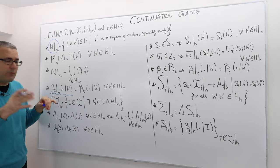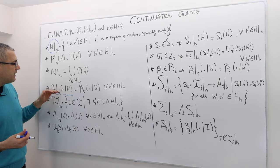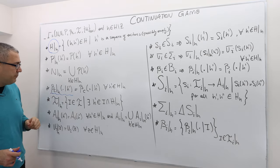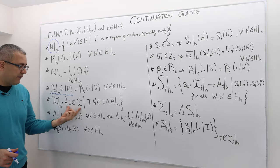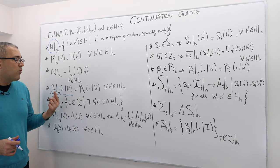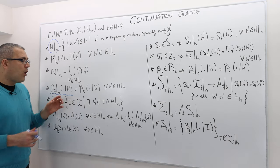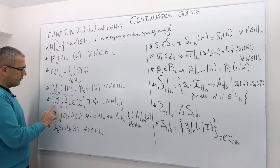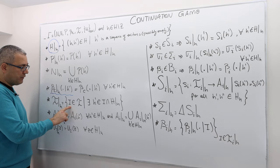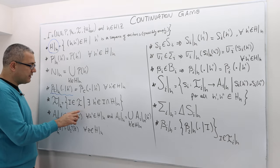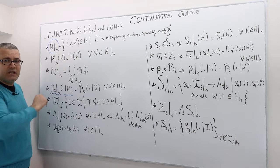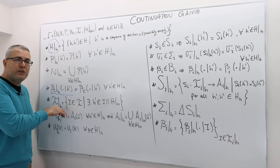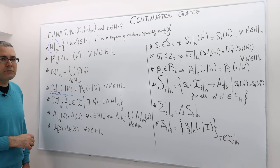Nature's probability distribution constrained by history h is going to be exactly the same probability distribution, but we define it only for histories that are in this set. The information partition is exactly the same — it is a subset of the original information partition — but we only include the information sets that are going to be played after history h. More formally, the information partition consists of information sets of the original game such that there exists some history h-prime which is in this constrained set and also in the information set I. If such an h-prime exists, we put that information set into the constrained information partition.